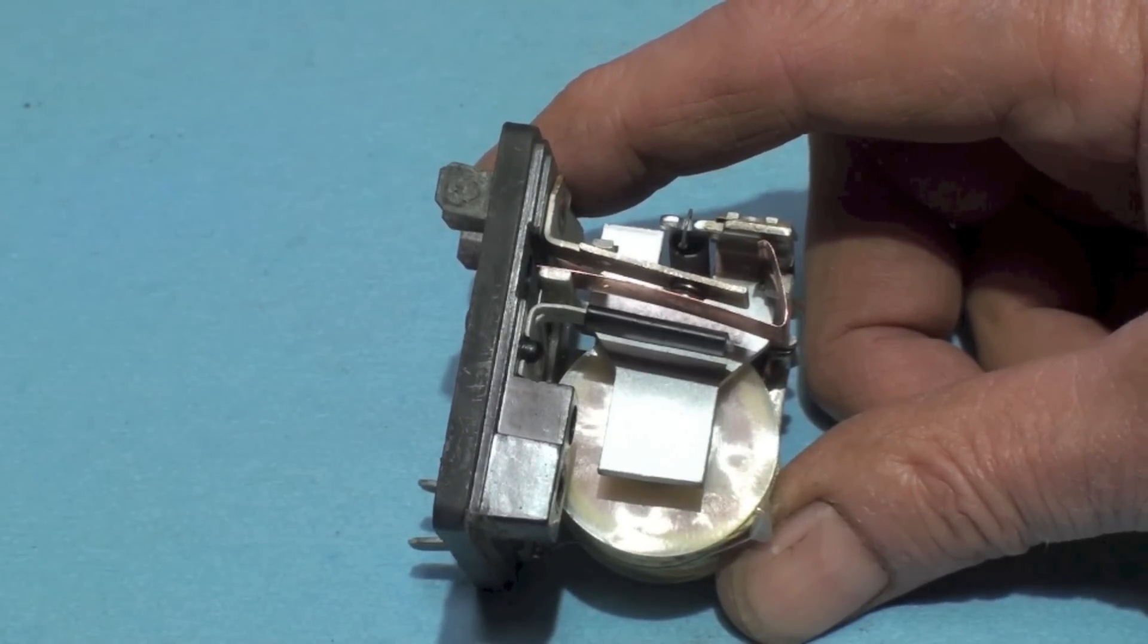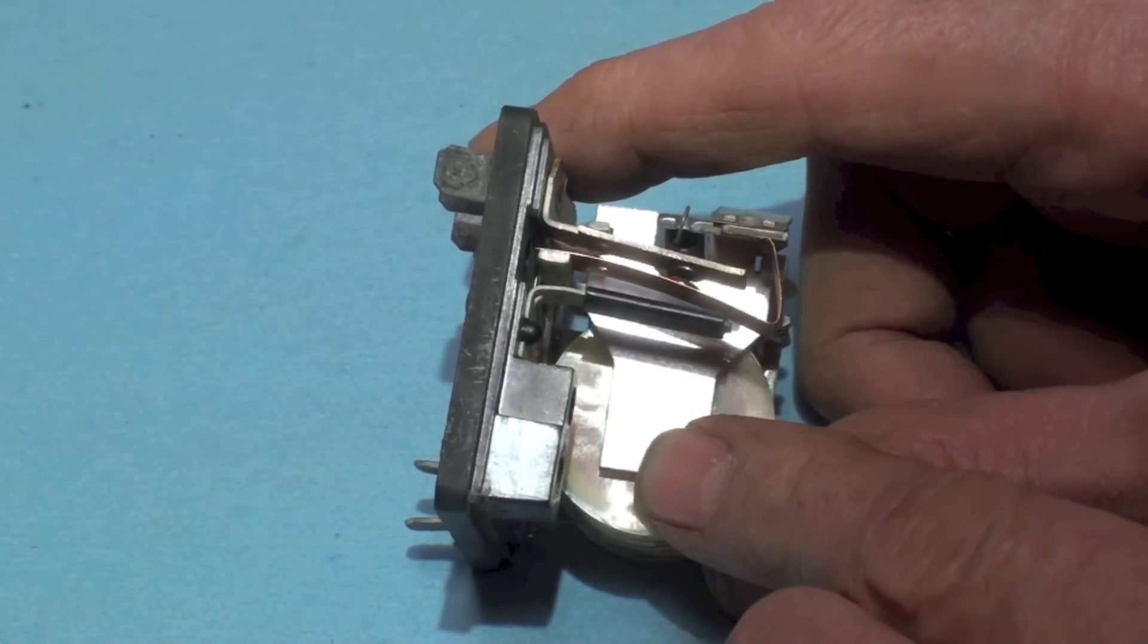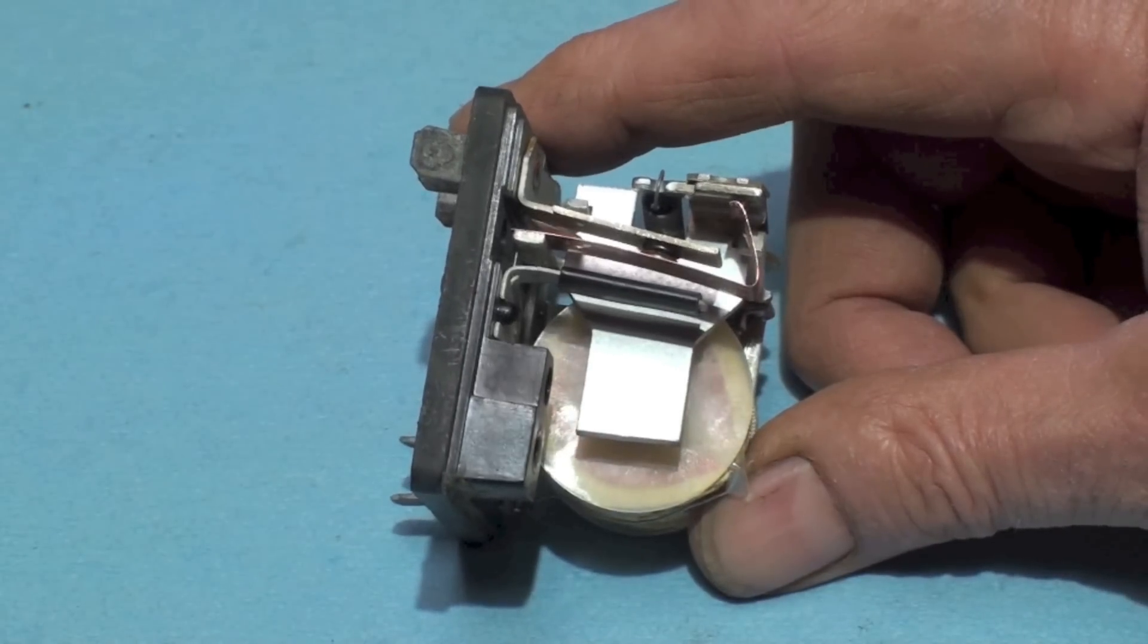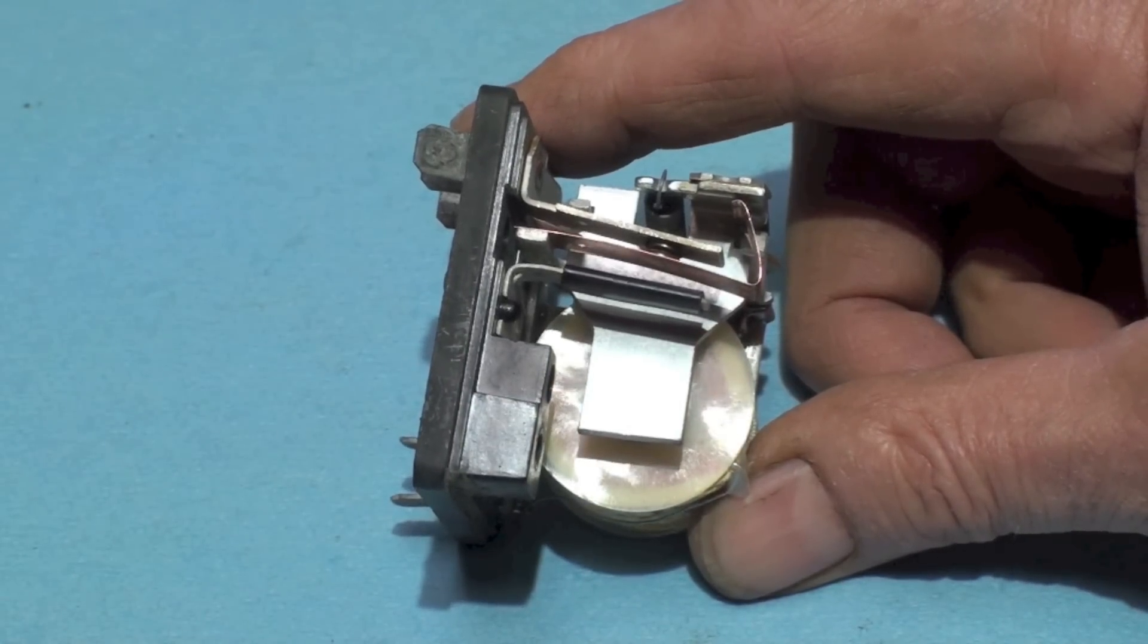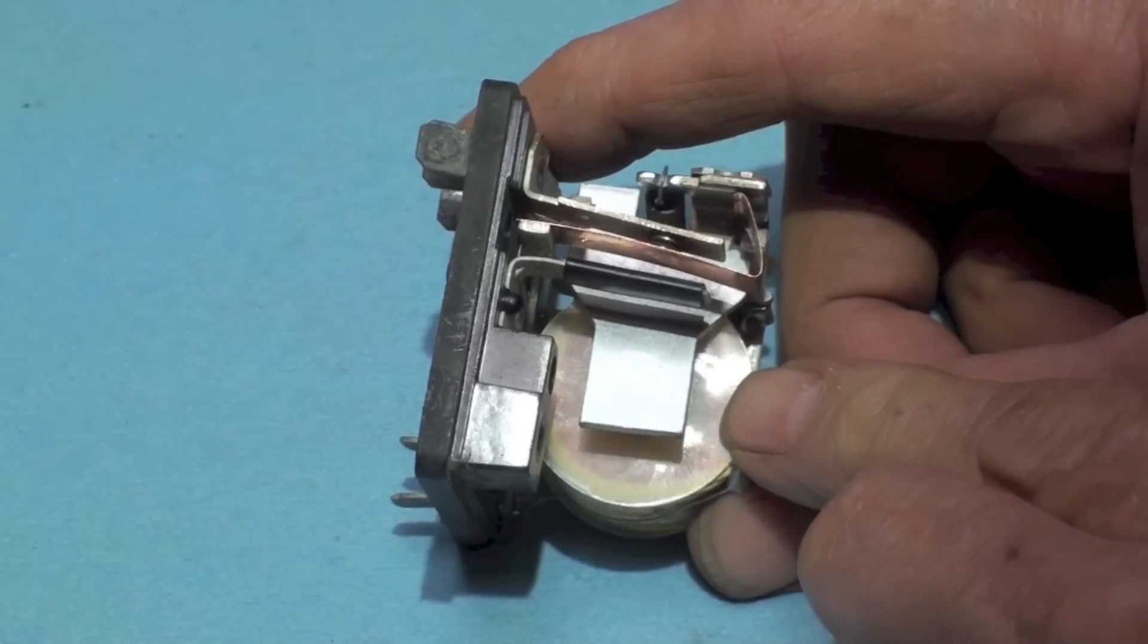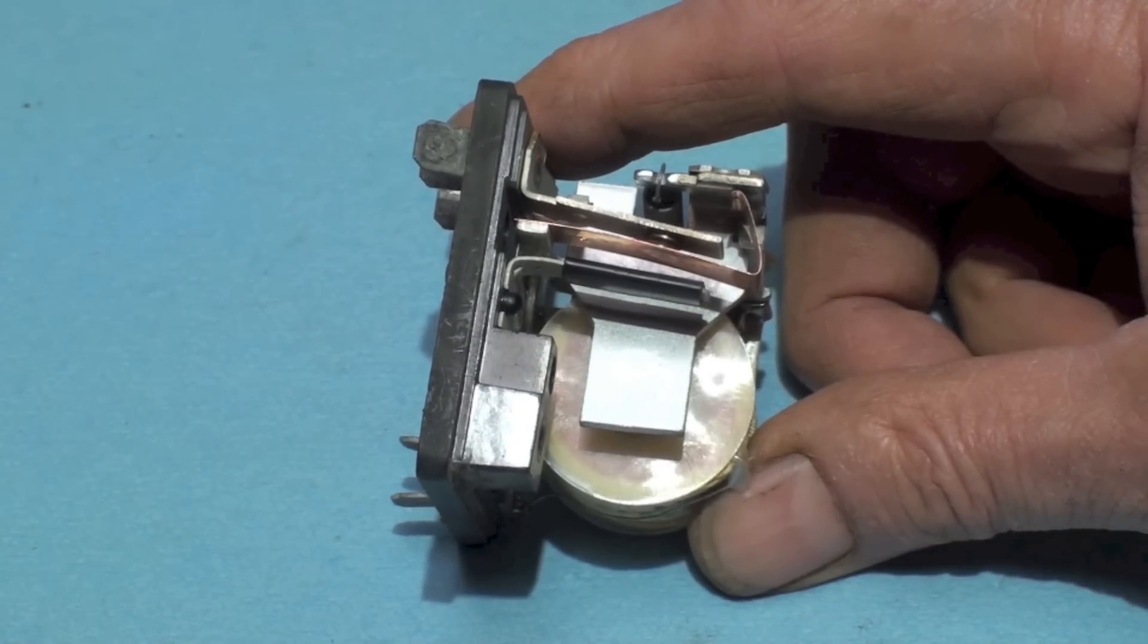Remember now that back EMF is going to be low as a compressor starts and of course be zero when the compressor starts, which would put 220 volts through this.